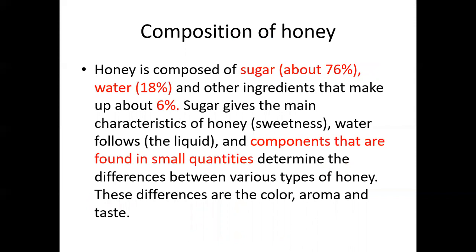What is the composition of honey? Honey is composed of about 76% sugar, 18% water, and 6% other ingredients. Sugar gives the main characteristic of honey — its sweetness. Water gives its special consistency. The components found in small quantities determine the difference between various types of honey. These differences are in color, aroma, and taste, all dependent on those minor components.